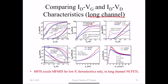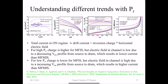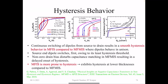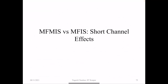In MFMIS, all dipoles switch together, while in MFIS they switch one by one, leading to smoother hysteresis. We also analyzed short channel effects for both MFMIS and MFIS. At that time TCAD did not support this at all, so we did our own 2D numerical simulations in MATLAB and included the Landau model with the MOSFET model. We found that in a normal transistor you have threshold voltage roll-off with channel length scaling, but in negative capacitance transistors you see the opposite — roll-up. At some point you do see roll-off from conventional short channel effects.